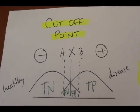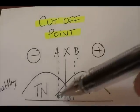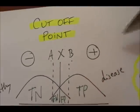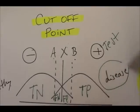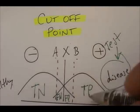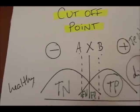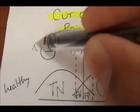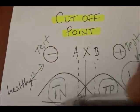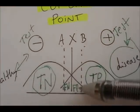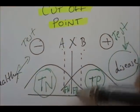First we have to understand what this diagram is. So imagine this side is for people who have a positive test and they have the disease — so positive test plus disease will be true positive. On the other side we have healthy people with a negative test, so that will be a true negative. And in the middle we have false negative on one side and false positive on the other.